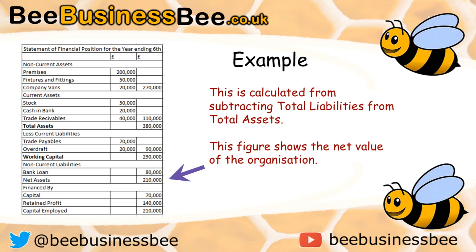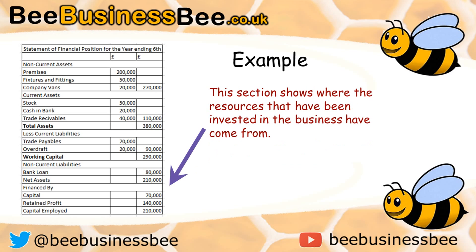Next we have net assets. The word 'net' effectively means total here. Net assets are calculated by subtracting your total liabilities from your total assets, showing the net value of the organisation — what the organisation is worth once all liabilities have been taken from the assets. In this example, the organisation is worth £210,000. The Statement of Financial Position also shows where the money in the business has actually come from — where the resources have come from — shown in the bottom section labelled 'financed by.'